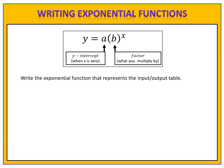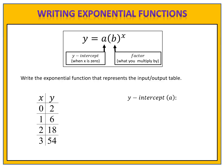In our first example, we want to write the exponential function that represents the given input and output table. To do this we need two things: we need to know the y-intercept, or the a value, and we need to know the factor, or the b value. The y-intercept is the y-value when x is zero. In our table, we look for the x-value of zero and find the corresponding y-value. Here that value is two, so the a-value, or the y-intercept, is two.